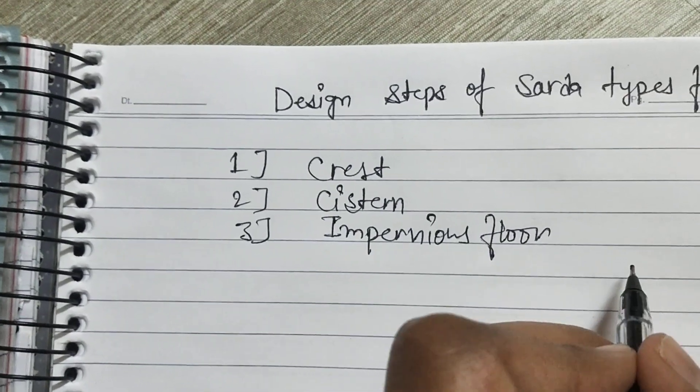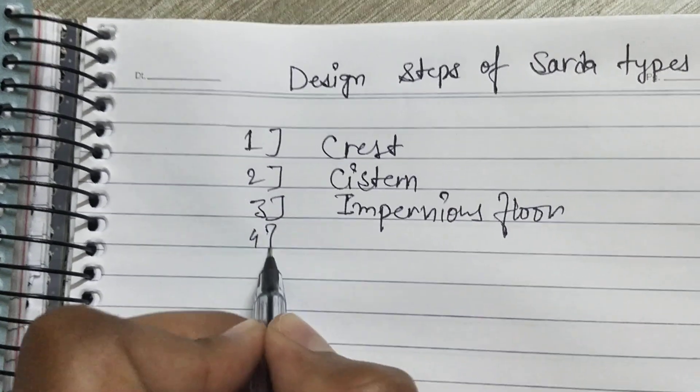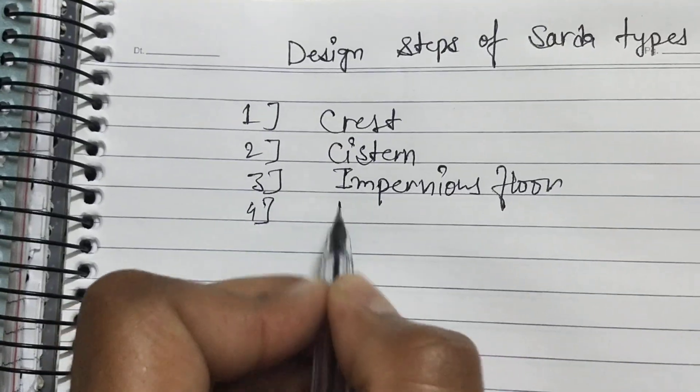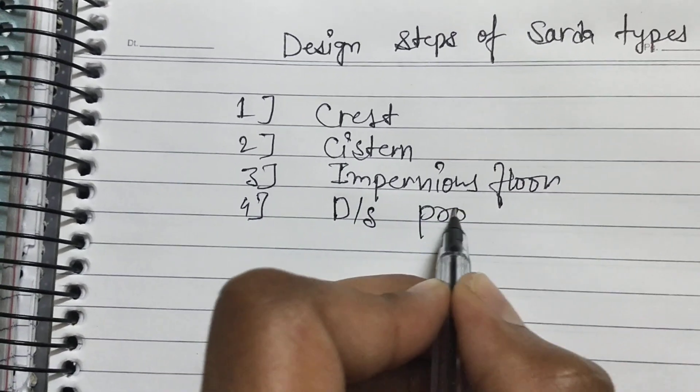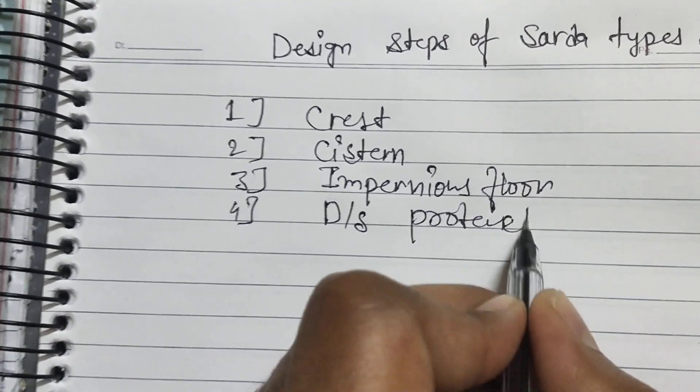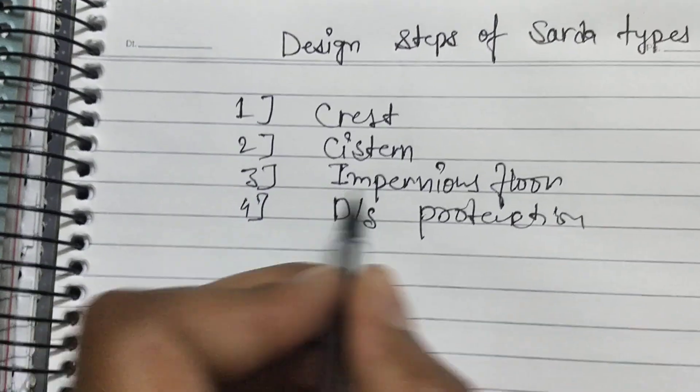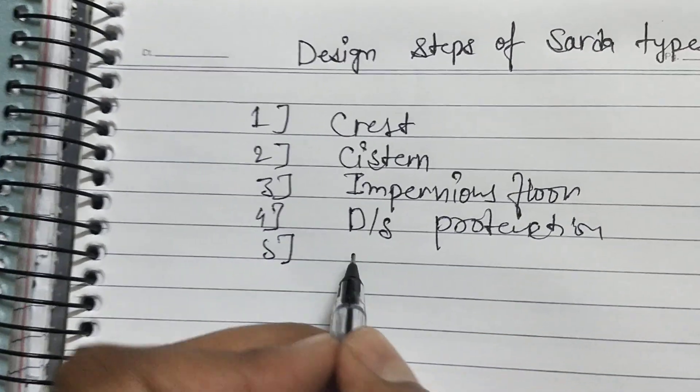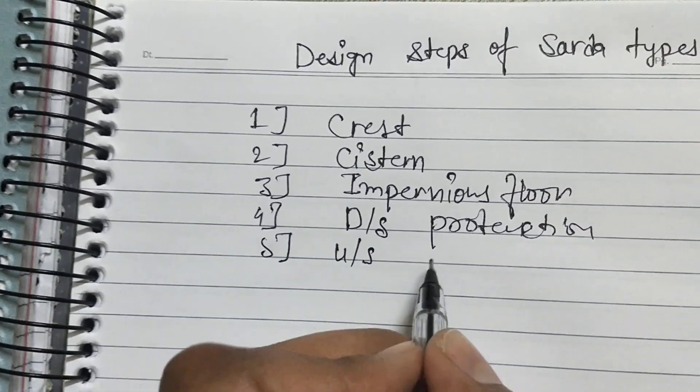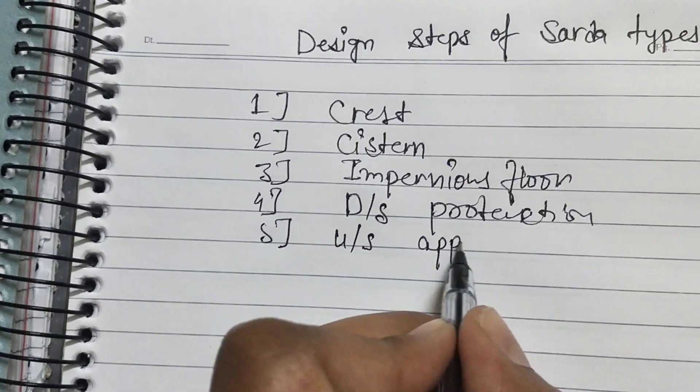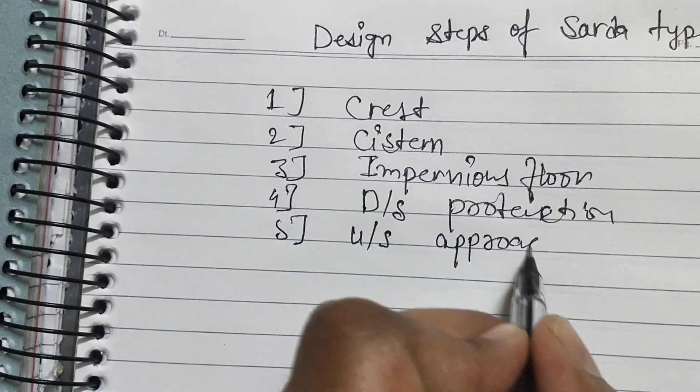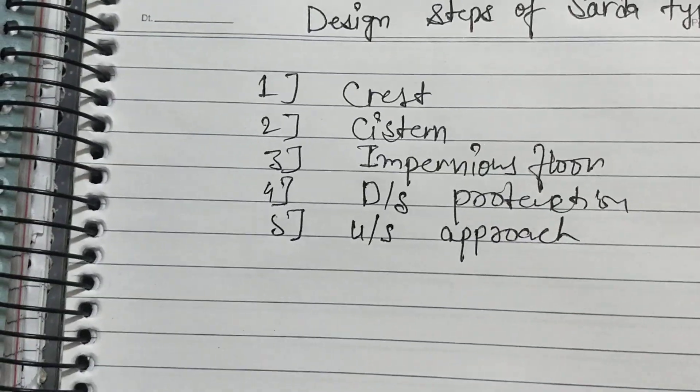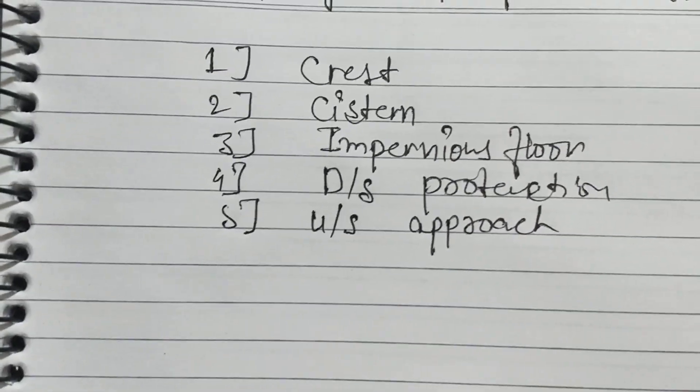That means Parivar Tal in Hindi. Fourth is downstream protection, that means Bahou Sanrachana in Hindi, and fifth is upstream approach, that means upar ki or pahunch.